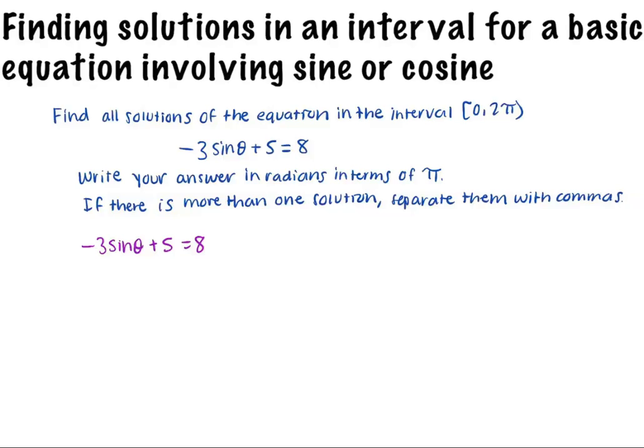I know that sine θ in the unit circle is the y-coordinate of the point where the terminal side intersects the unit circle. The y value of the point on the unit circle is negative 1 at 3π over 2, but I don't see any others, so there is only one answer for this problem, and it is θ equals 3π over 2.